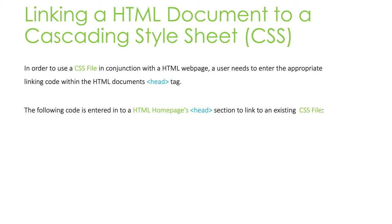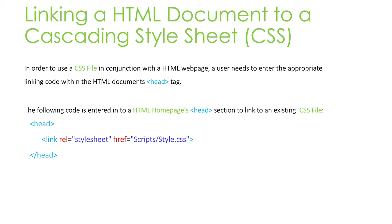We're going to relate to the homepage first, because the code from the homepage is slightly different to that of the subpages due to the directory pathway involved to get to the actual stylesheet. So here's the head section of my code, and this is the code I would need to enter from my homepage: link rel stylesheet — to say that we are linking to a stylesheet — and then href, the reference, and then the directory path to get to my stylesheet from my homepage, which is within a folder named scripts, then a slash, and then the name of the file: style.css.